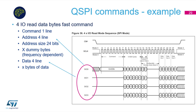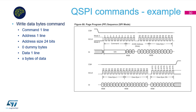As mentioned, memories offer more commands for read operations. Here is command 0xEB for communication on four lines. The command phase runs on one line, but the other phases run on four lines, which increases communication performance significantly.